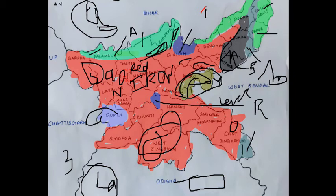Alluvial soil is divided into two parts: one is Bhangar and the other is Khadar. Bhangar means older soil and Khadar means new soil.